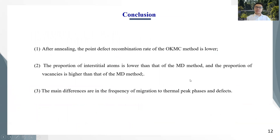So, the conclusions of my research can be summarized as follows. After annealing, the point defect recombination rate of the OKMC method is lower, and the proportion of interstitial atoms is lower than the MD method, while the proportion of vacancies is higher than that of the MD method. The main differences are in the frequency of migration during the thermal spike phase and the defect distributions between the two different simulation methods.